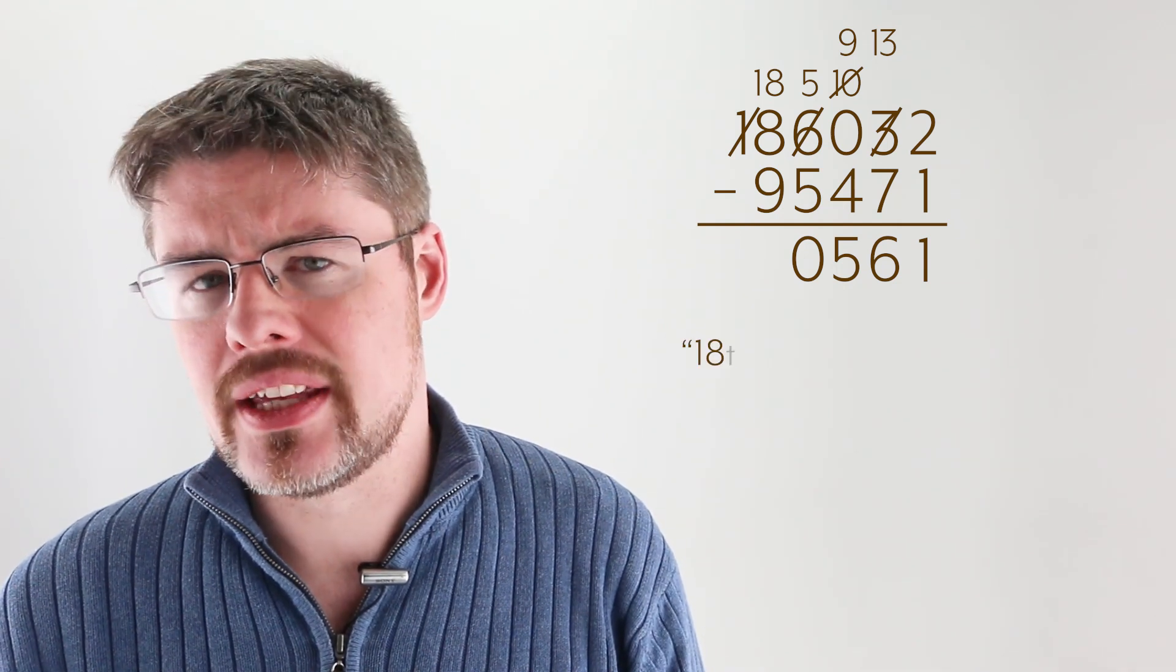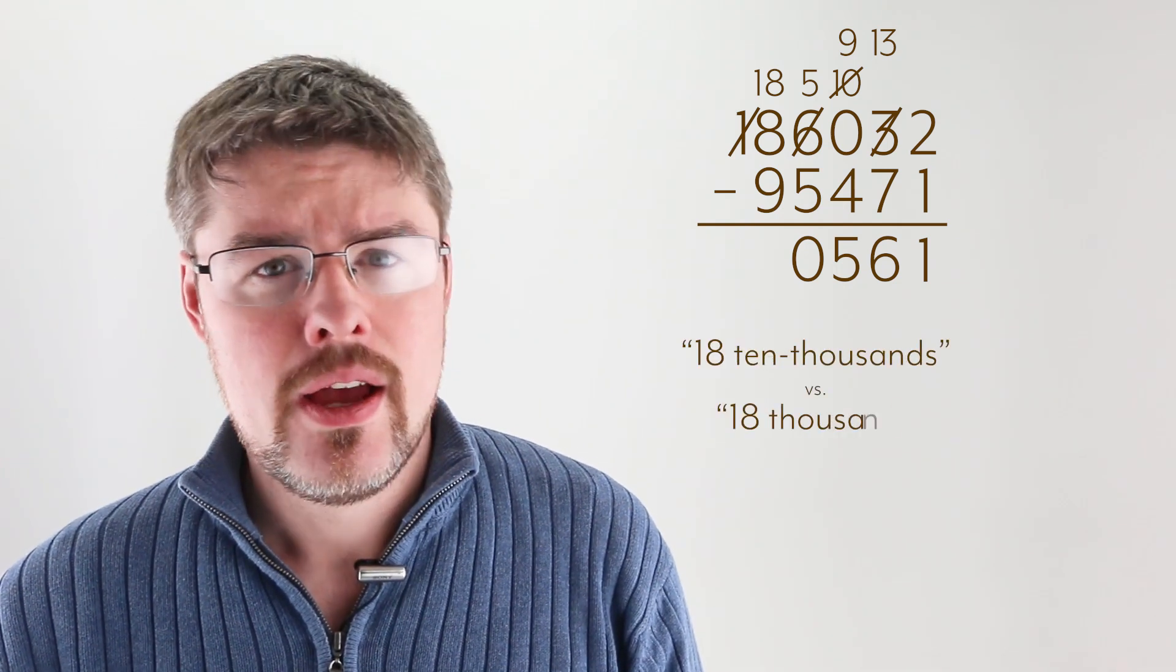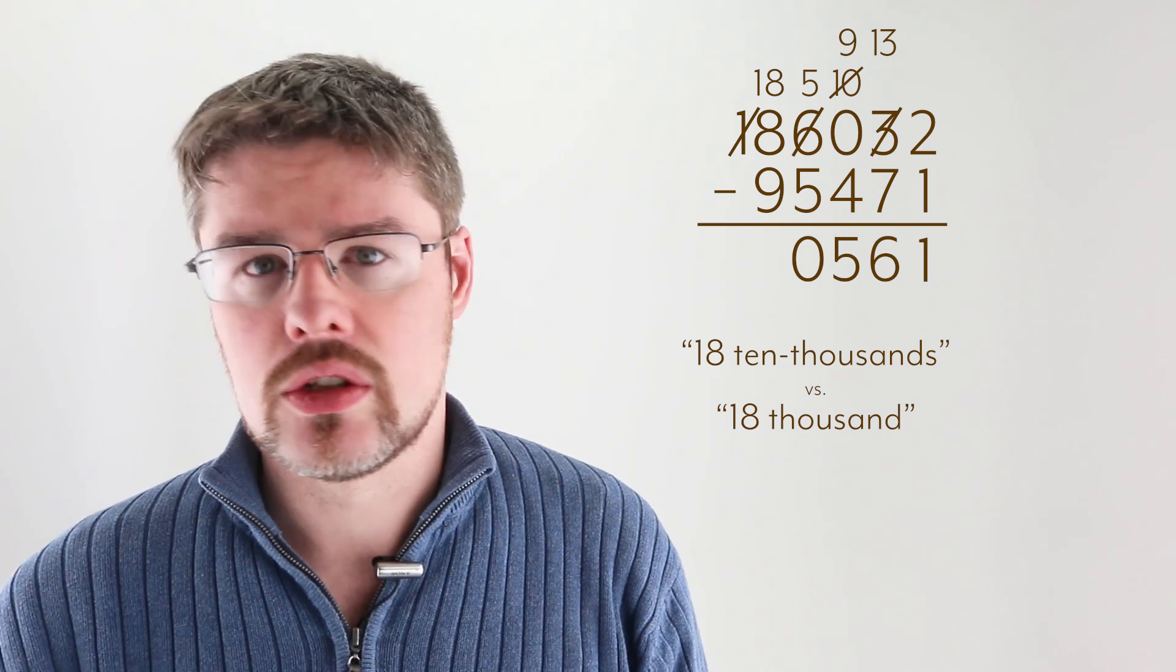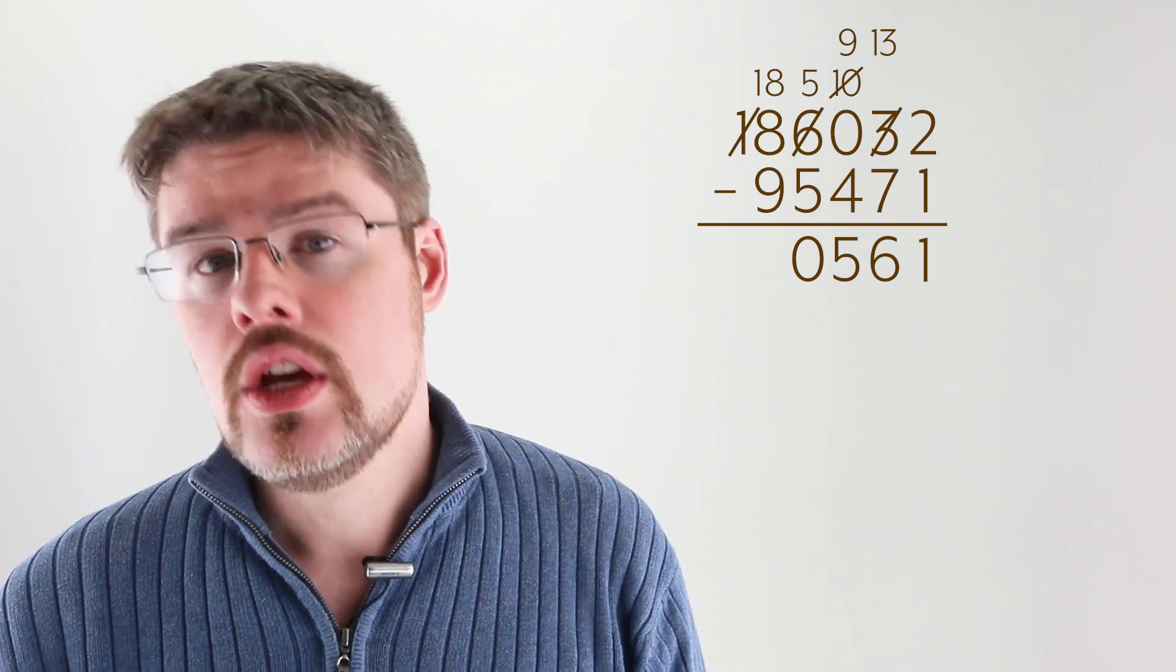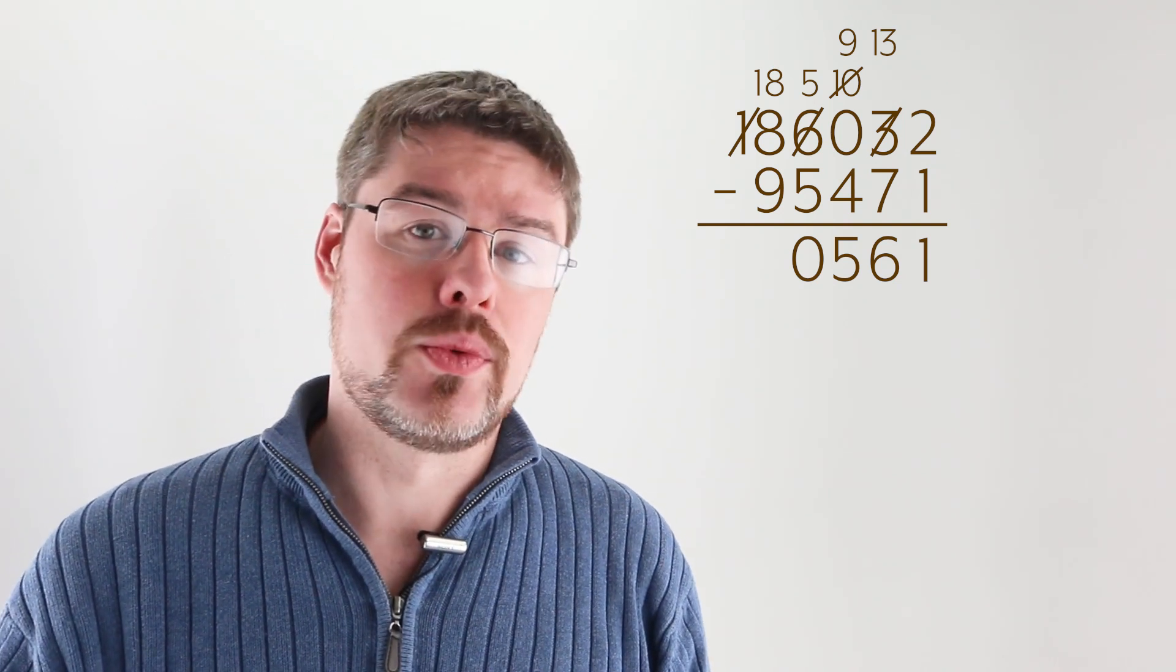It might sound a little funny to say, because I'm essentially taking each place value and naming it explicitly, but fundamentally it's the same idea all across the board. If you don't have enough value in some particular digit, you simply take one from the next one up, call it ten on the level you're at, and add that to the value you've got, and then do the subtraction as normal.